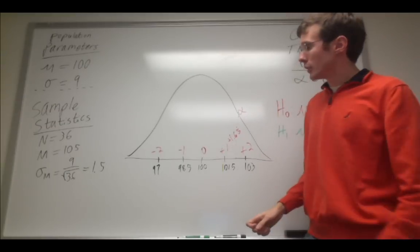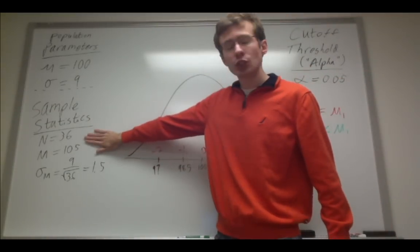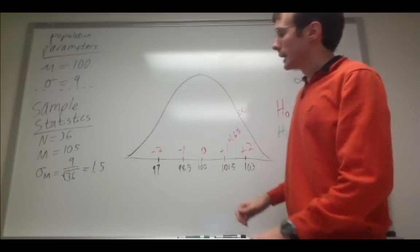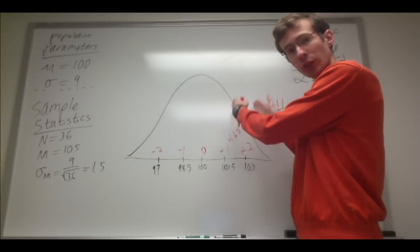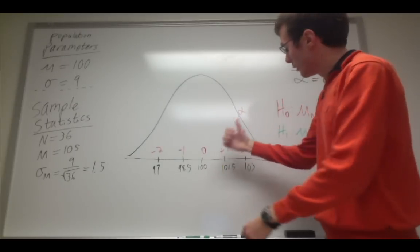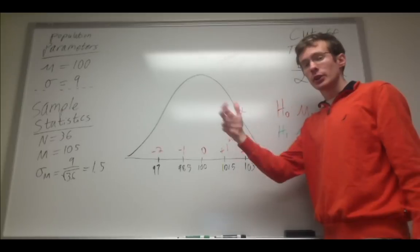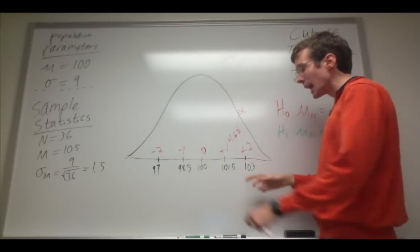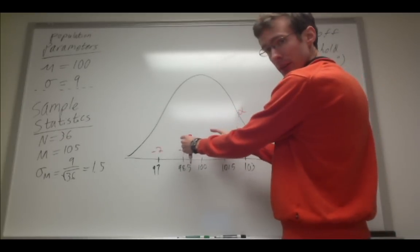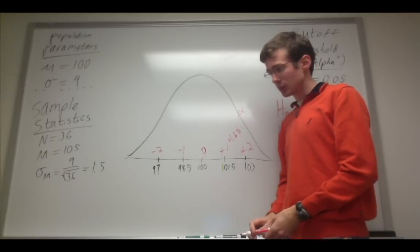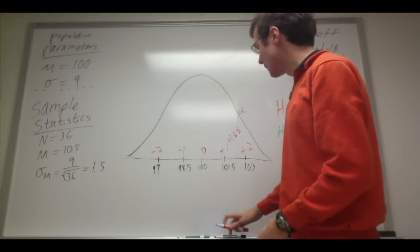Now, all I do is I calculate the z-score for this sample mean that I drew, and I see where that falls in relation to this cutoff threshold. If it's more extreme, if it's beyond the border of my cutoff, I'm going to go ahead and reject the null hypothesis. If it's not, if it falls on this side of the cutoff threshold, I'm going to fail to reject the null hypothesis. So let's go ahead and calculate this here.